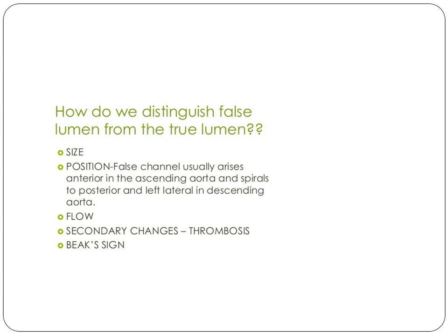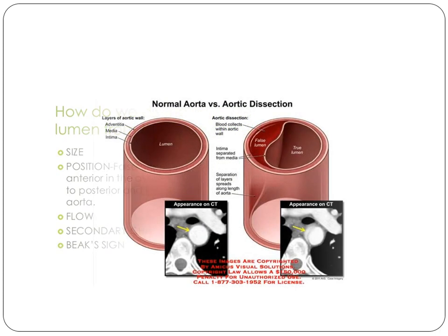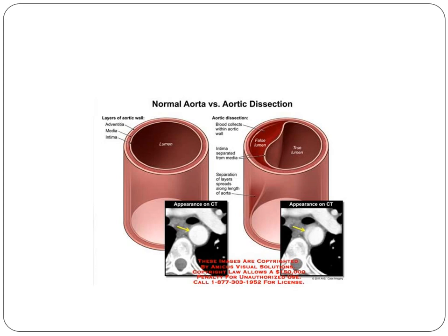Secondary changes such as thrombosis are present in the false lumen. We also have some signs like the beak sign and other signs to be discussed later.